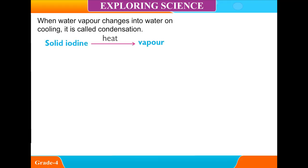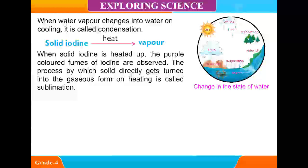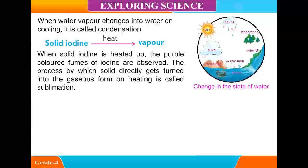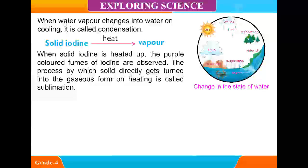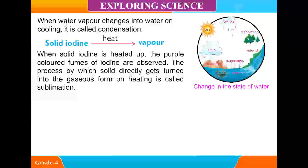Solid iodine. Heat. Vapour. When solid iodine is heated up, the purple colored fumes of iodine are produced. The process by which a solid directly gets turned into the gaseous form on heating is called sublimation.